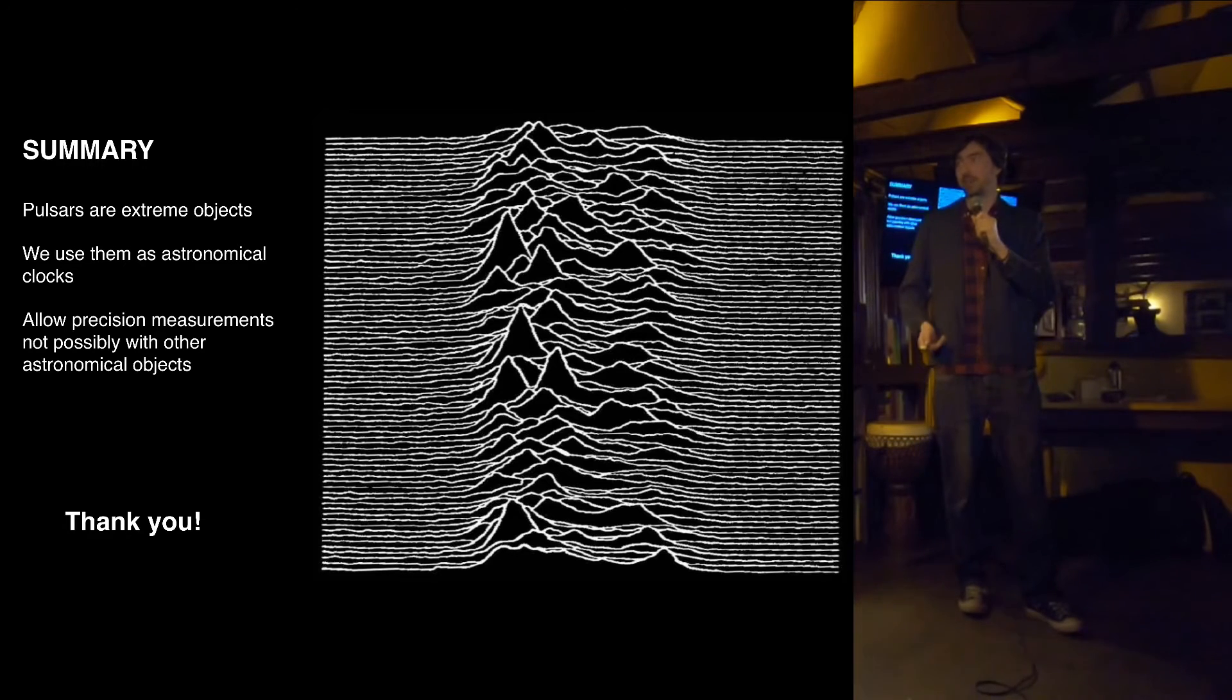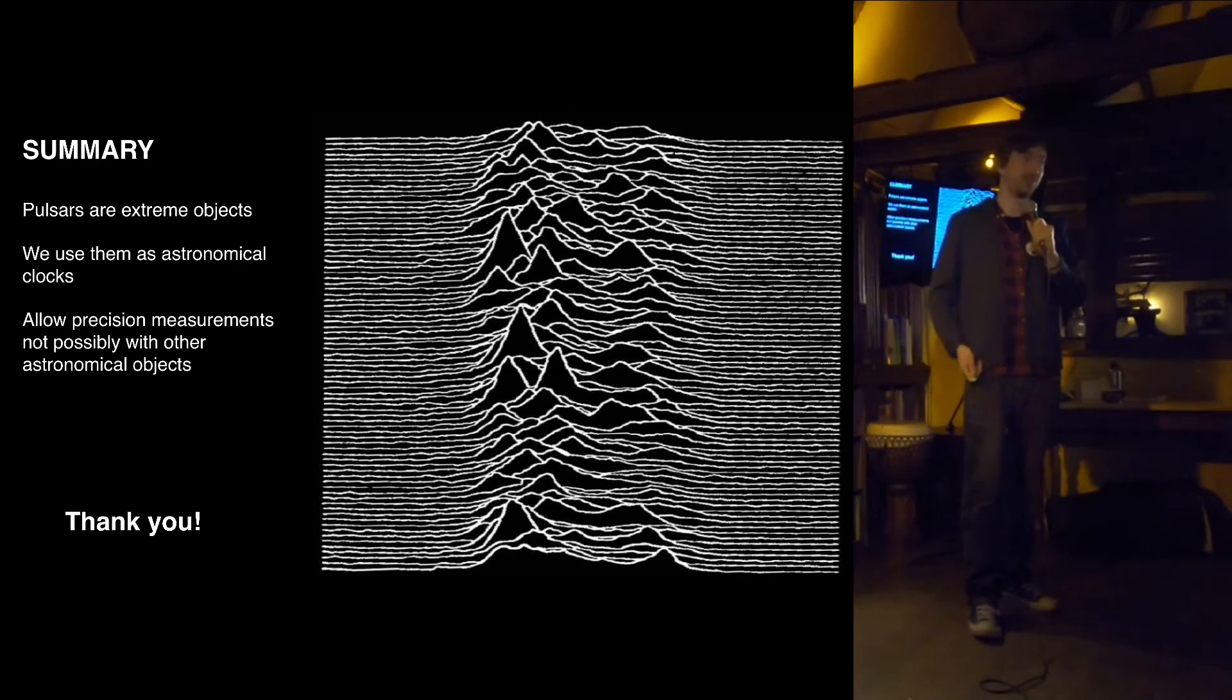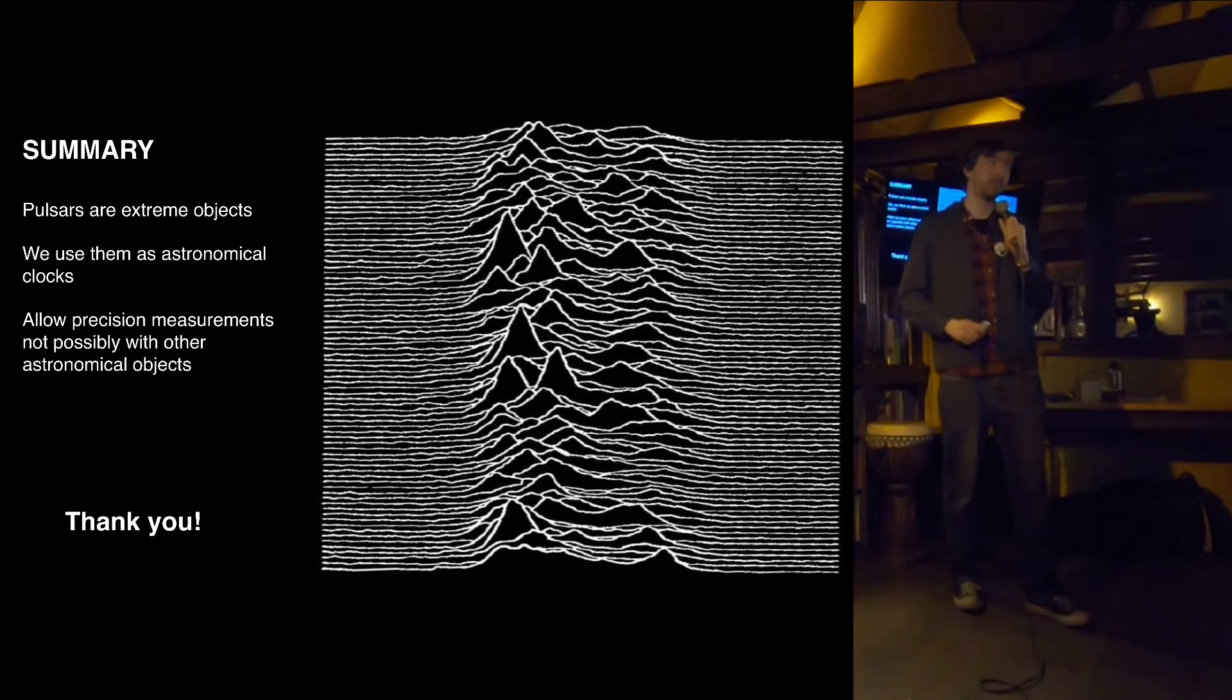So I'll just leave you with this picture. A lot of you will recognize this as the album cover, Unknown Pleasures from Joy Division. And this is a train of pulses from the first pulsar that was discovered, the one way back on one of the first slides. So pulsars are astronomical clocks and they allow precision measurements of extreme objects that are not possible with any other techniques. Thank you very much for having me and I look forward to answering your questions.